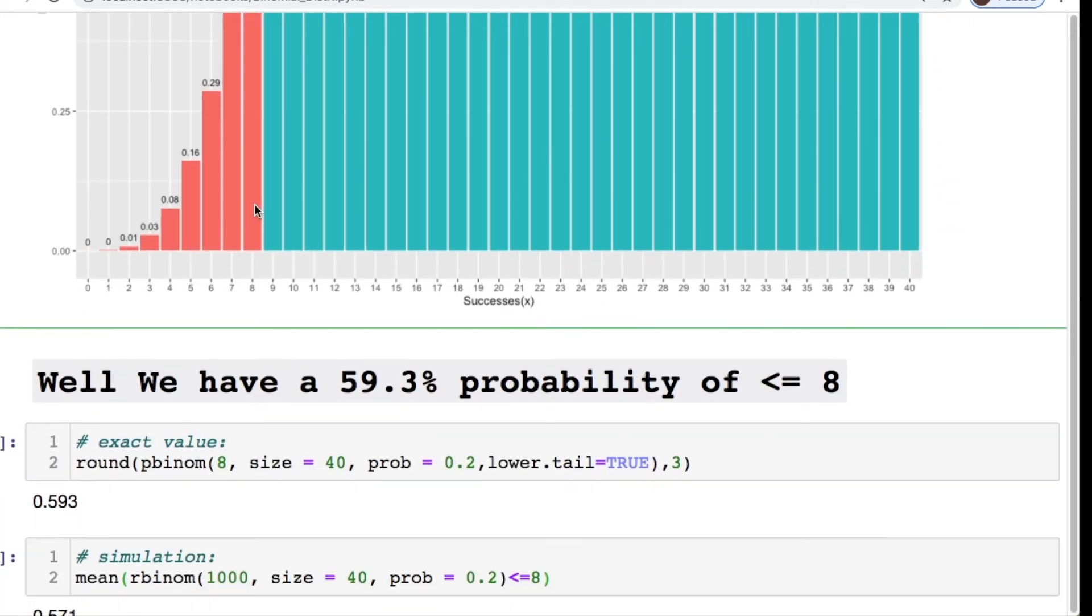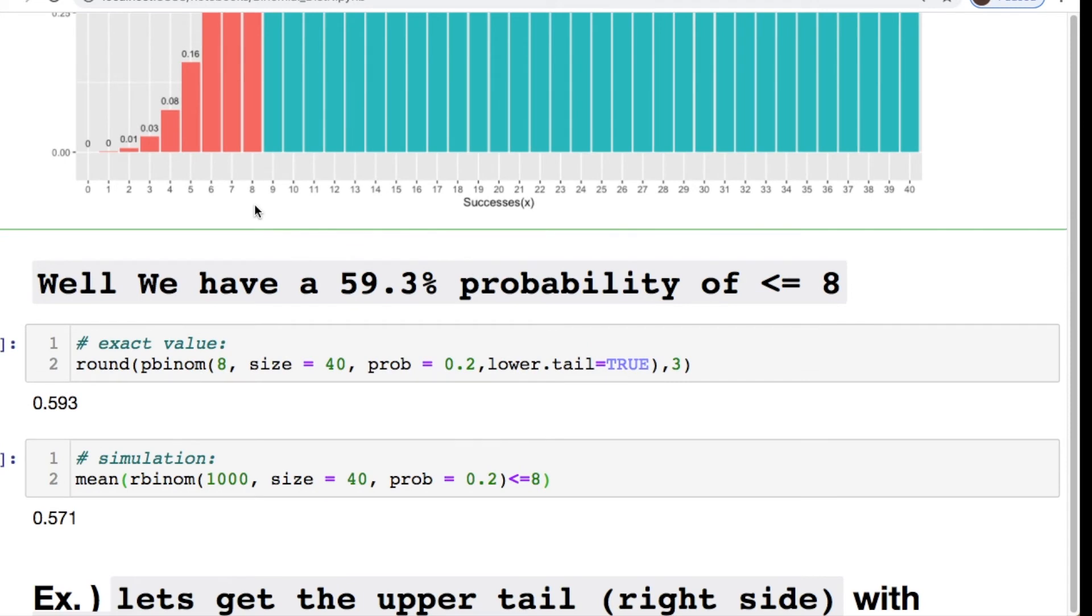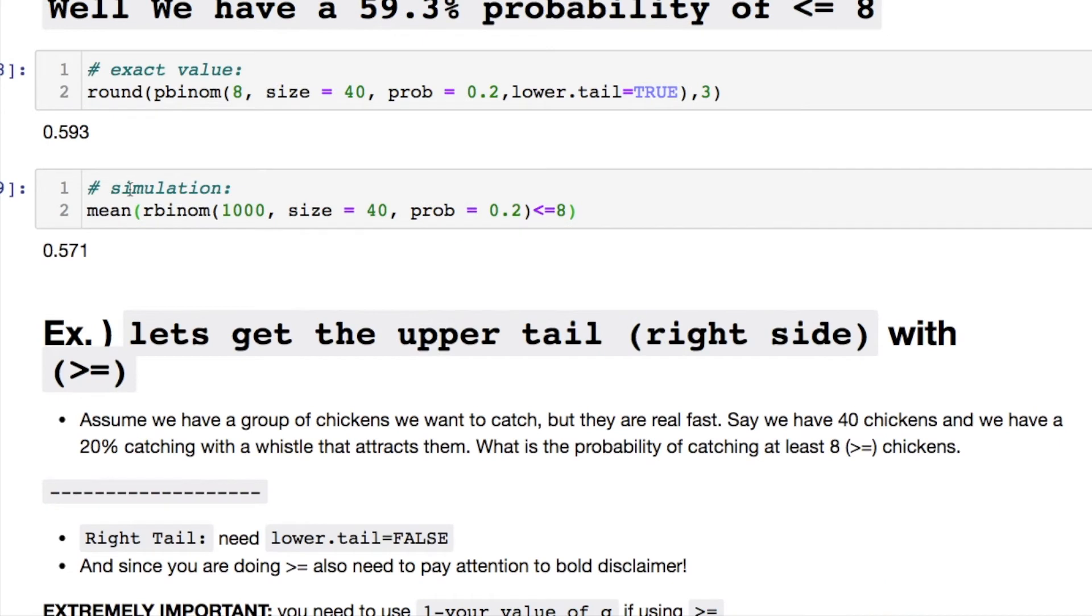So we have our less than or equal to and it turns out at 8 we have 59 percent. Which means that we'll have a 59.3 percent probability of obtaining less than or equal to 8, given for each trial we have 40 whatever it is with a 20 percent chance of whatever it is occurring. Here's the simulated value versus the exact value. If you keep running this value you're going to get different values each time you run it. Just be aware of that unless you run a seed.